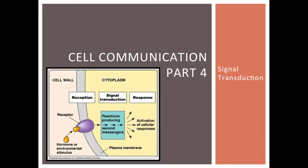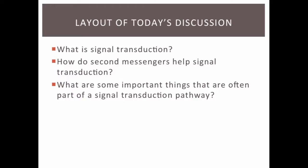Hi students. This lesson is all about how a signaling molecule binds to a cell's receptor and that signal is transmitted to its interior in order to ensure an appropriate response. In other words, this is all about signal transduction. First we'll define signal transduction, then we'll describe the molecules that pass along a message from the original ligand, and we'll end by describing two major components of most signal transduction pathways.